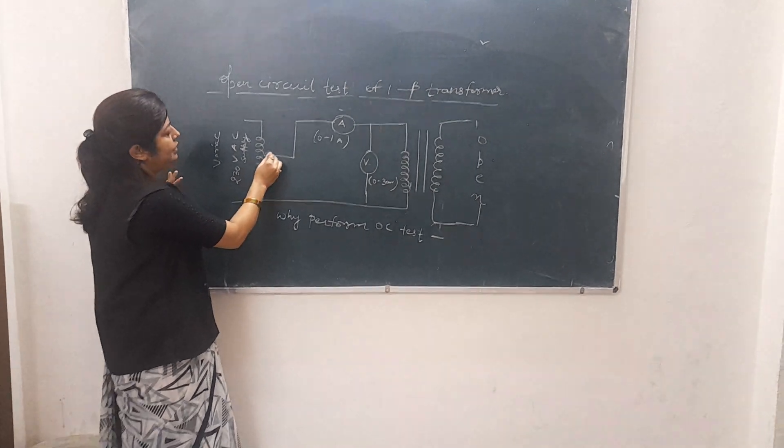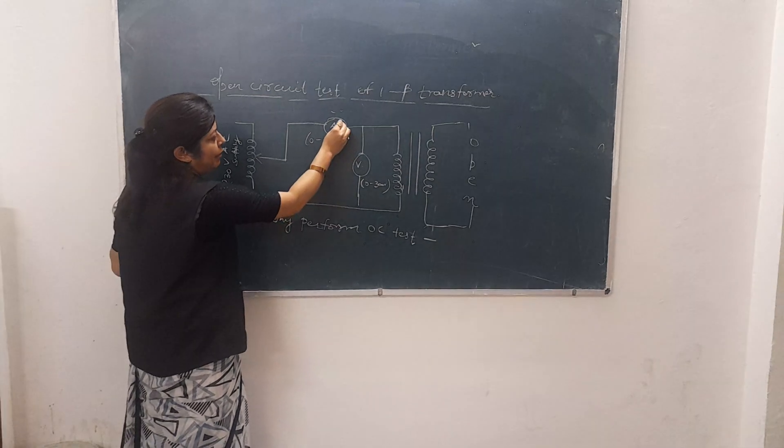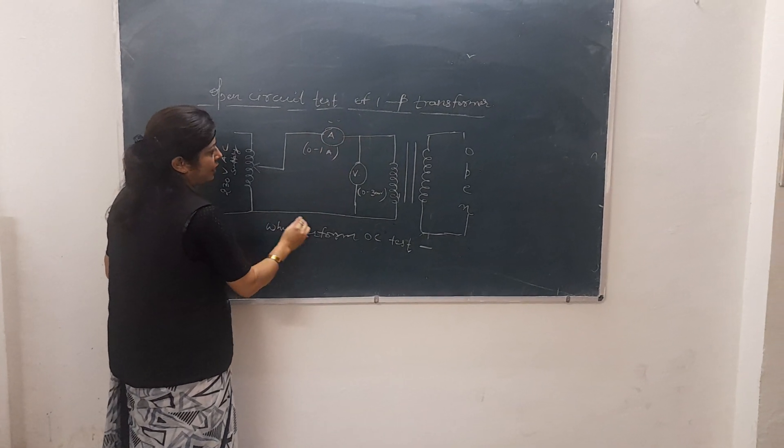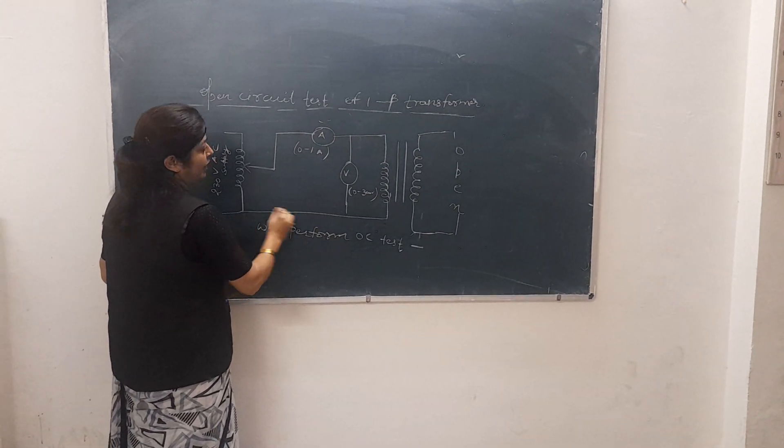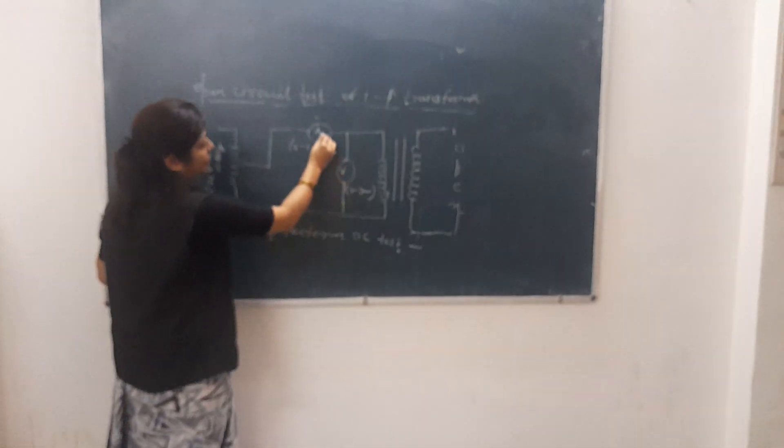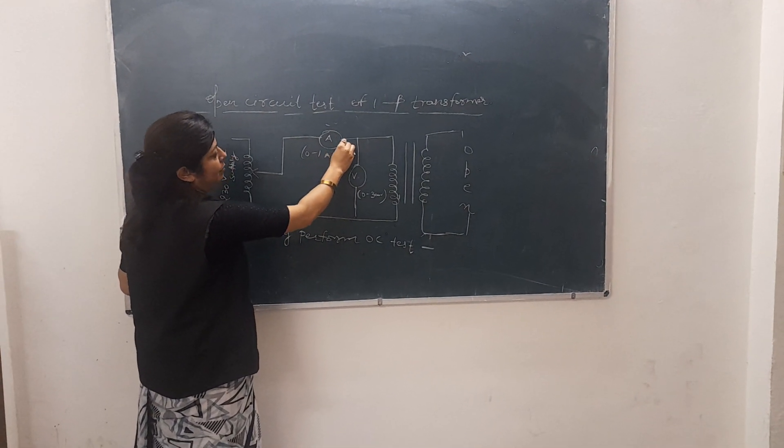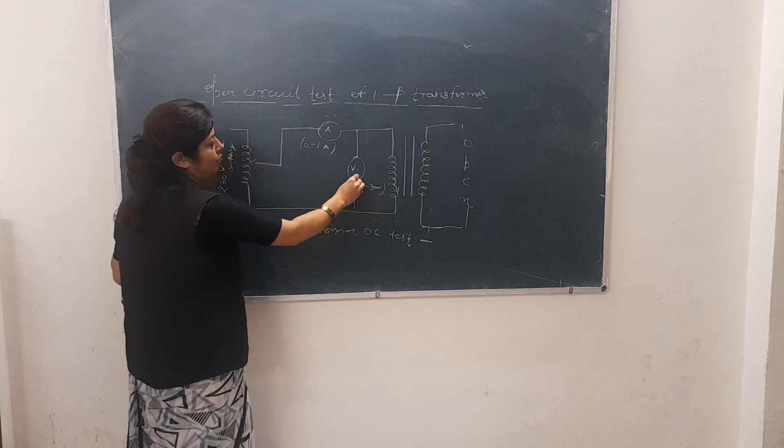Here you can see the first point of the variac is going to an ammeter, and the second point of the variac is going to a voltmeter. The point which is connected to the ammeter will also go to a voltmeter.